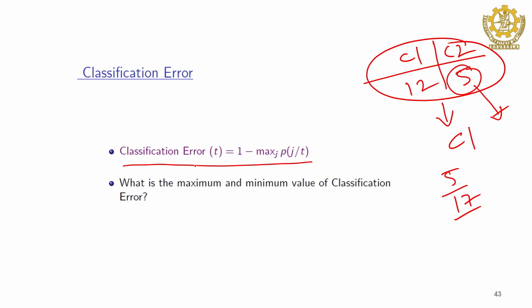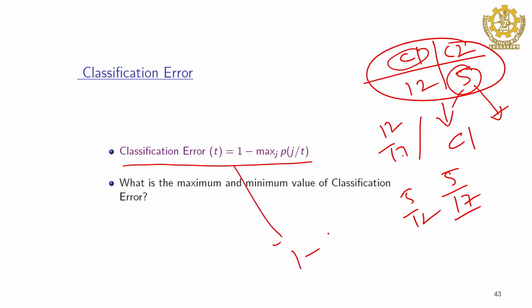The classification error formula is 1 minus the maximum probability class. Here C1 probability is 12/17 and C2 is 5/17; maximum is 12/17. So error = 1 − 12/17 = 5/17. We label a node with the class to which the majority of objects belong; the remaining objects cause errors. The minimum value of classification error is 0 (all patterns in one class) and the maximum is 1 − 1/nc.